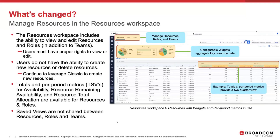As you can see on the right, there are per-period metrics available, and widgets are available. This is a common grid, so there's a lot of flexibility in the resources and roles tab to present information to users. We've got totals and per-period metrics available for availability, resource remaining availability, and resource total allocation — the TSPs available for both the resources and roles sections. Saved views within the resources area and roles area are independent views and don't share across those particular areas.